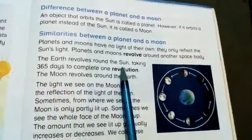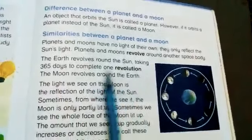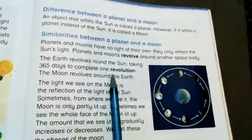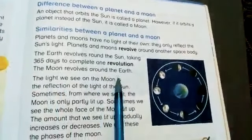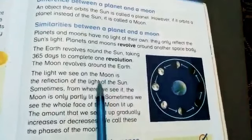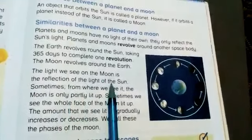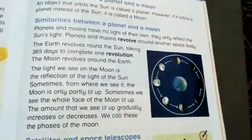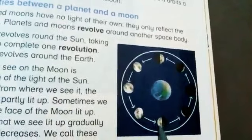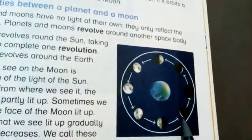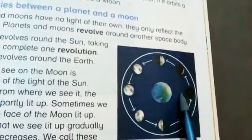Our planet Earth revolves around the sun and it takes about 365 days to complete one revolution. The moon revolves around the Earth — this is what you all know. The moon is glowing, and this is all because of the reflection of the light of the sun, because the moon doesn't have its own light. Sometimes the moon looks like a full moon, sometimes a crescent shape, and sometimes very thin.